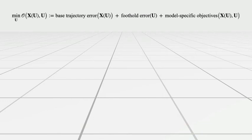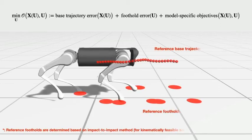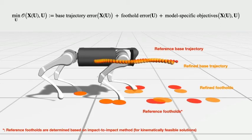We define the objective function as a sum of base trajectory error, foothold error, and model-specific objective terms. The foothold error is an error between reference foothold and MPC prediction of foothold, where the reference footholds are determined based on simple impact-to-impact method for kinematically feasible footholds.